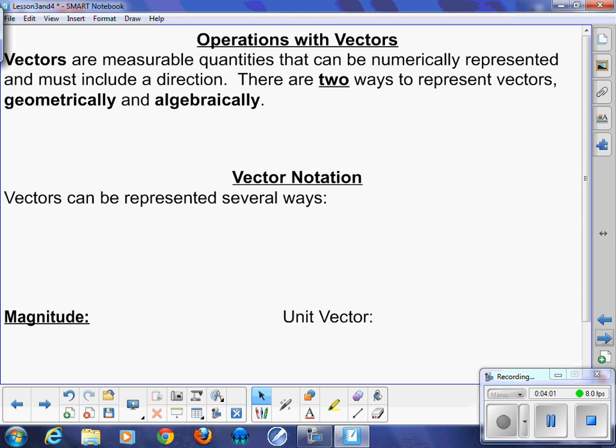Okay. So operations with vectors. Vectors are very, very, very important for the grade 12 course if you want it to be done right. So vectors are measurable quantities that can be numerically represented. So we can represent them with numbers. And they must include a direction. So the partner to a scalar, remember that the vector in a scalar has measurable quantities. It's the direction that sets the vector apart. Two ways to represent vectors. And they're geometrically and algebraically.